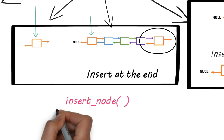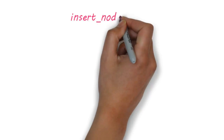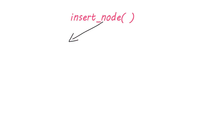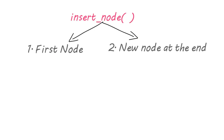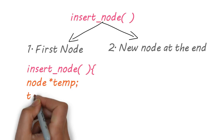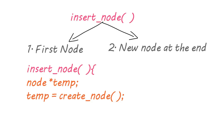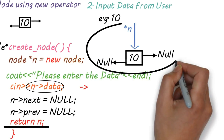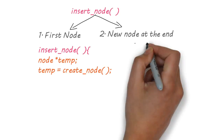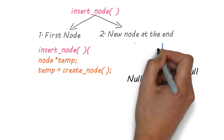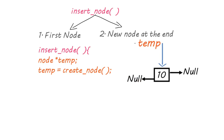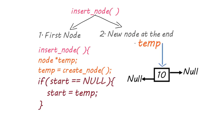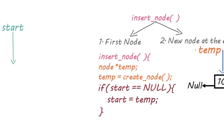Now let's code inside the insertNode function. Inside insertNode, we need to handle two things: first, if the node is the first node of the linked list, and second, add the new node at the end of the list. I created a pointer called 'temp' — createNode will return a pointer and temp will hold it. To check the first condition, if the start pointer is null and the condition is true, we say: start pointer, go point to the first node.